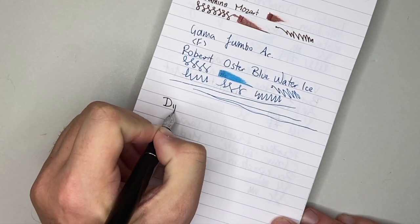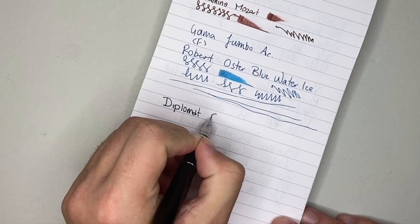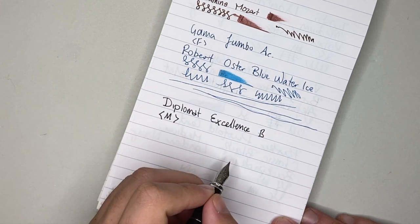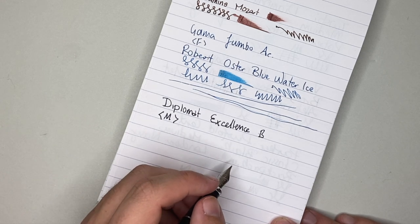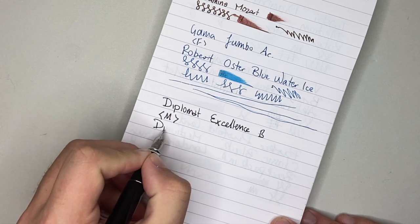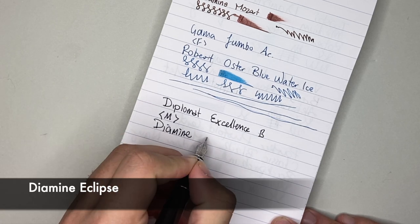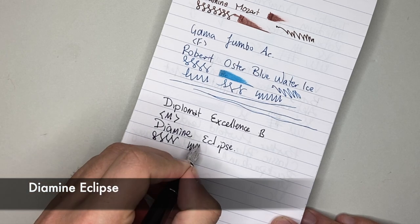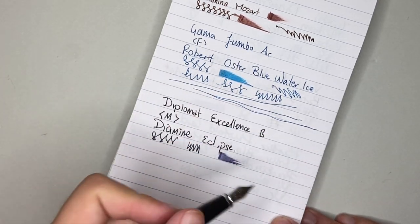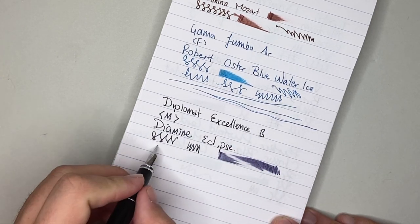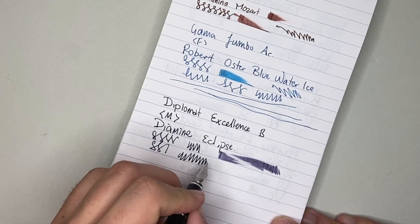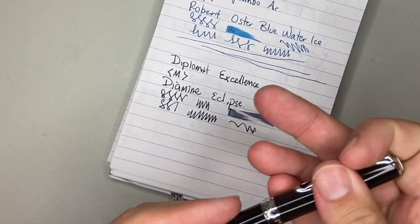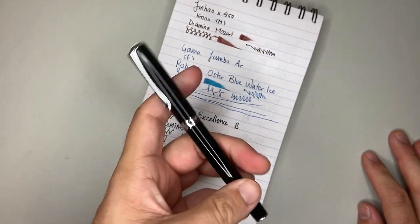So we have this has a medium steel nib on it. The nibs that Diplomat use are Jovo nibs, but they tune them all themselves. And the ink in here is Diamine Eclipse. You can hear, very smooth pen. Pretty wet. As you can probably tell, that's my preference is for a wet pen. But this one is just beautiful and smooth. And with cartridges, converter ink, bottled ink, whatever the case may be, it's just a really lovely pen to write with. Which is why, another reason why I travel with this pen a lot. Why it stays with me and why it's still in my collection.